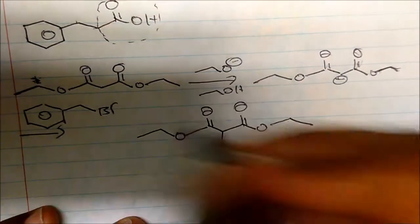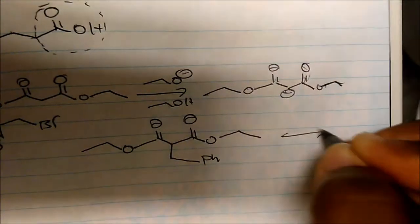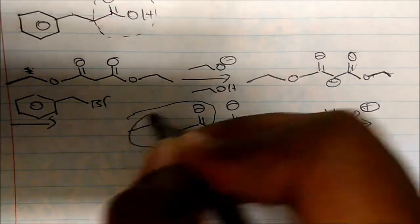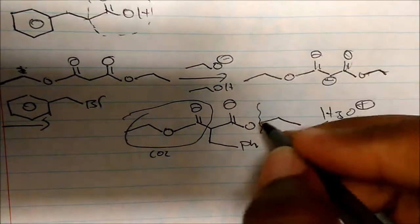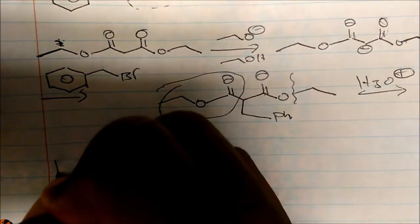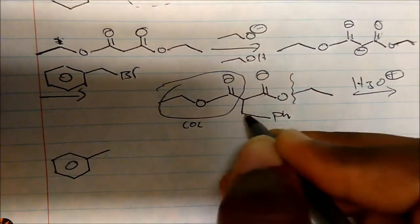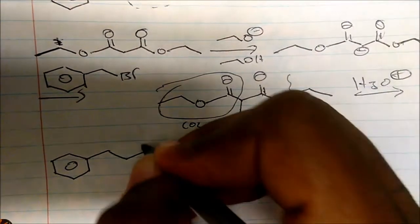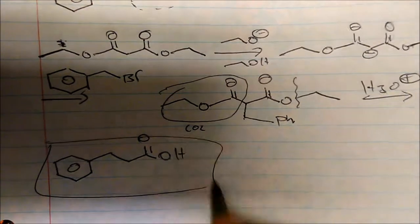This carbon is bonded to the carbon that has the phenyl group. Then we simply hydrolyze — treat with acid. This whole group goes to CO2, and we cleave and hydrolyze to get the carboxylic acid plus ethanol. Redrawing the structure, we have the phenyl group bonded to a carbon, bonded to a carbon, bonded to the acetic acid — which is exactly the structure we created.